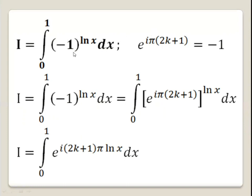So instead of minus 1, we will write this exponential form. So I becomes the integral from 0 to 1 of e to the power i pi (2k+1) all raised to the power ln x. Multiplying the powers, we have I equals the integral from 0 to 1 of e to the power i(2k+1) pi ln x.